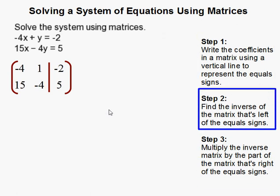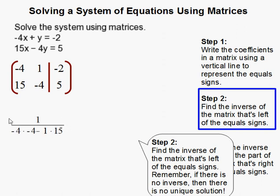The next thing is to find the inverse of the matrix that's left of the equal signs. Now remember, to find the inverse you have to do a few things. First you find the determinant, which is what I'm doing here. That's ad minus bc, and I'm putting 1 over that because you need to divide a matrix by it.